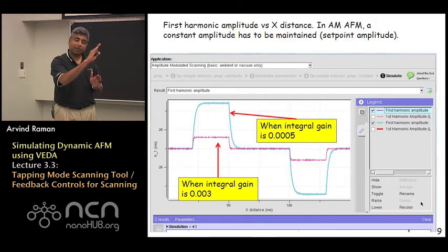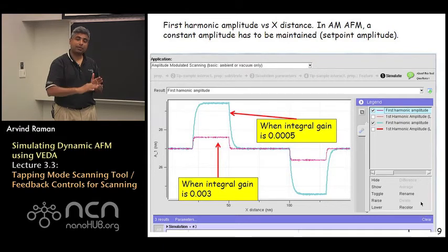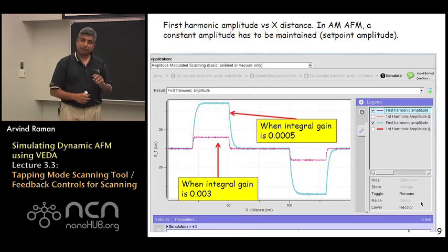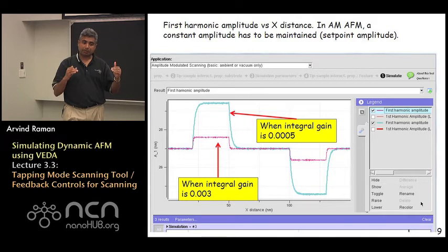And you can see that as you increase the integral gain, these error signals are starting to come down. So this is a very instructive example of why when one uses different gains, what influence they have.